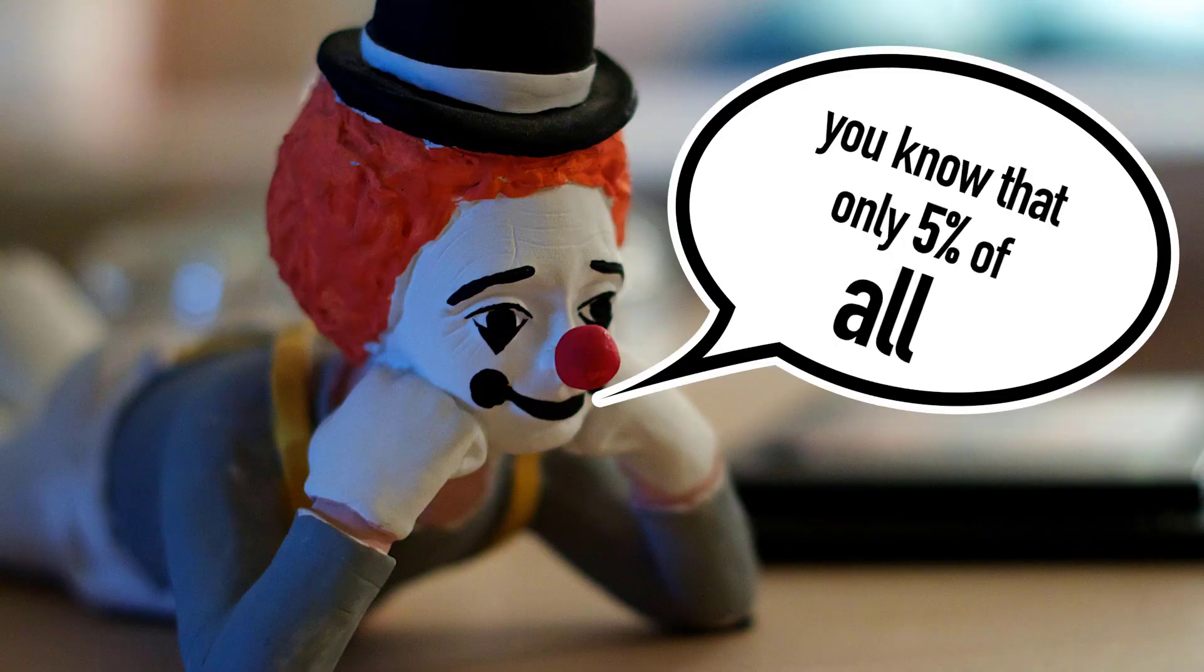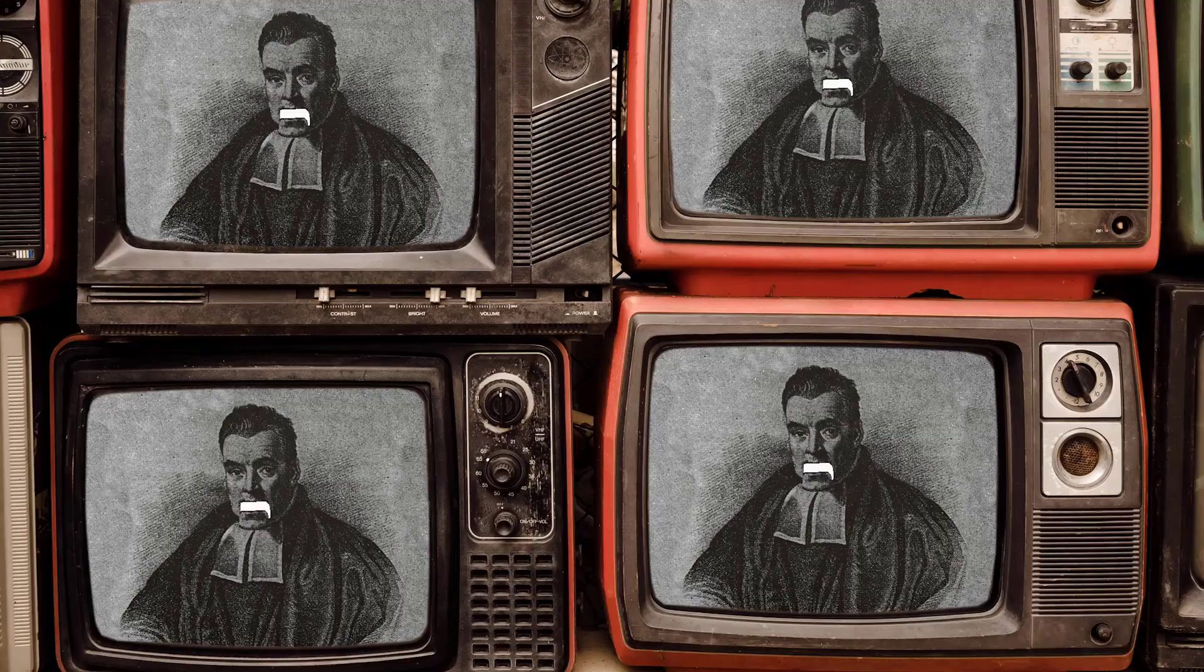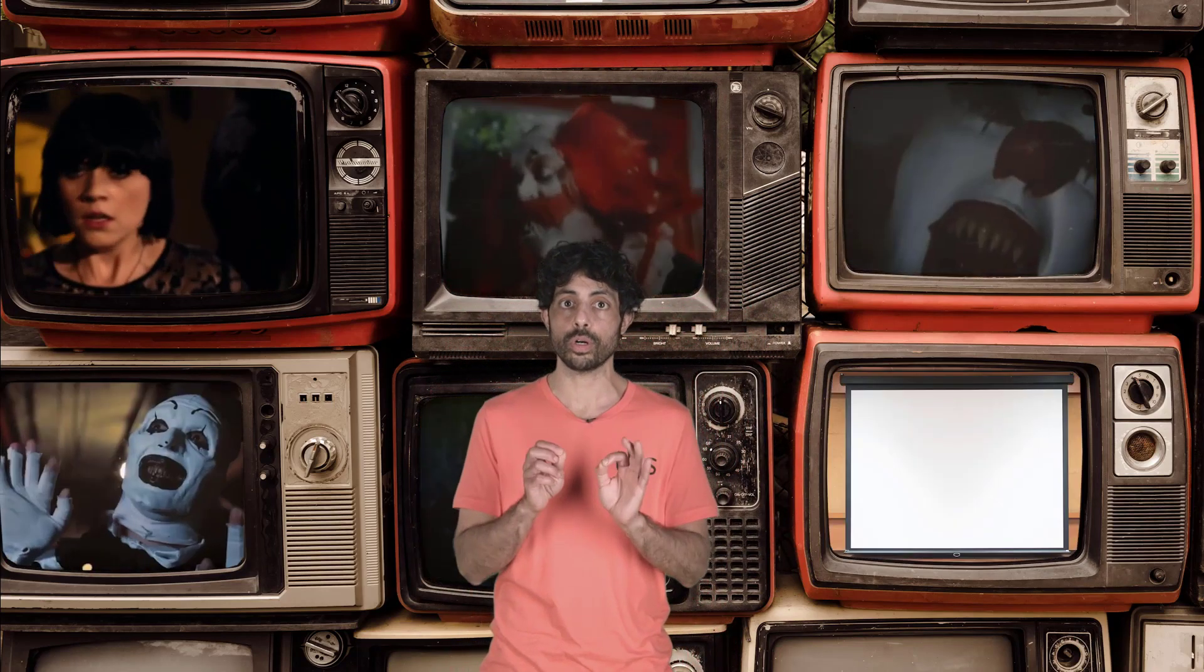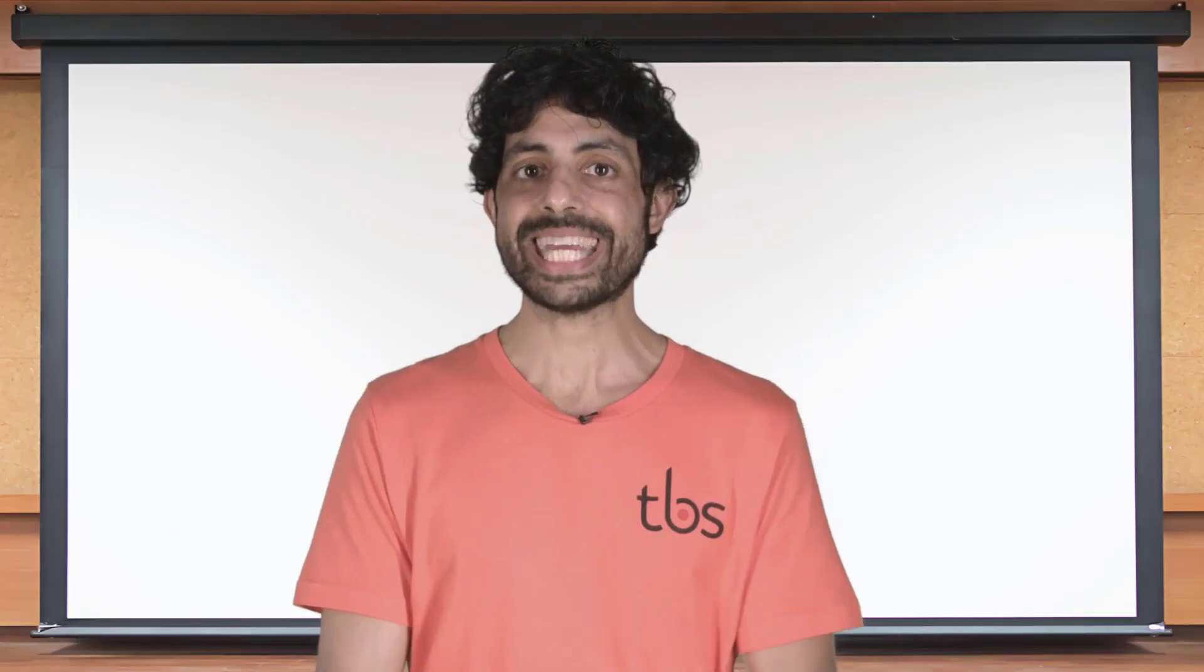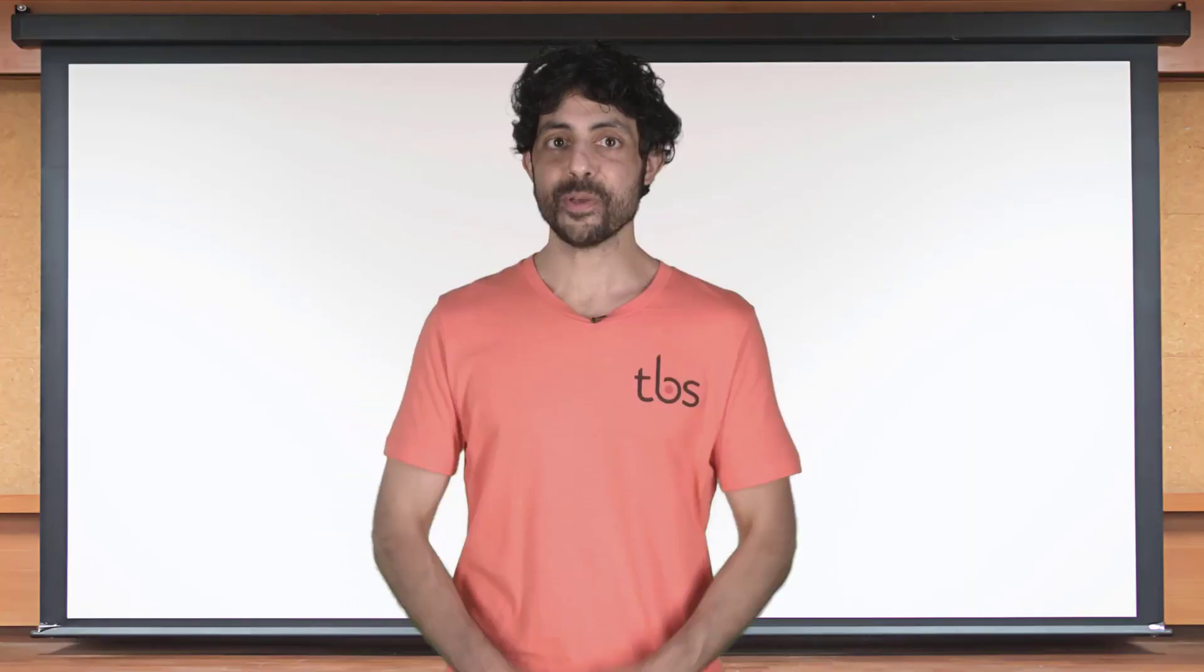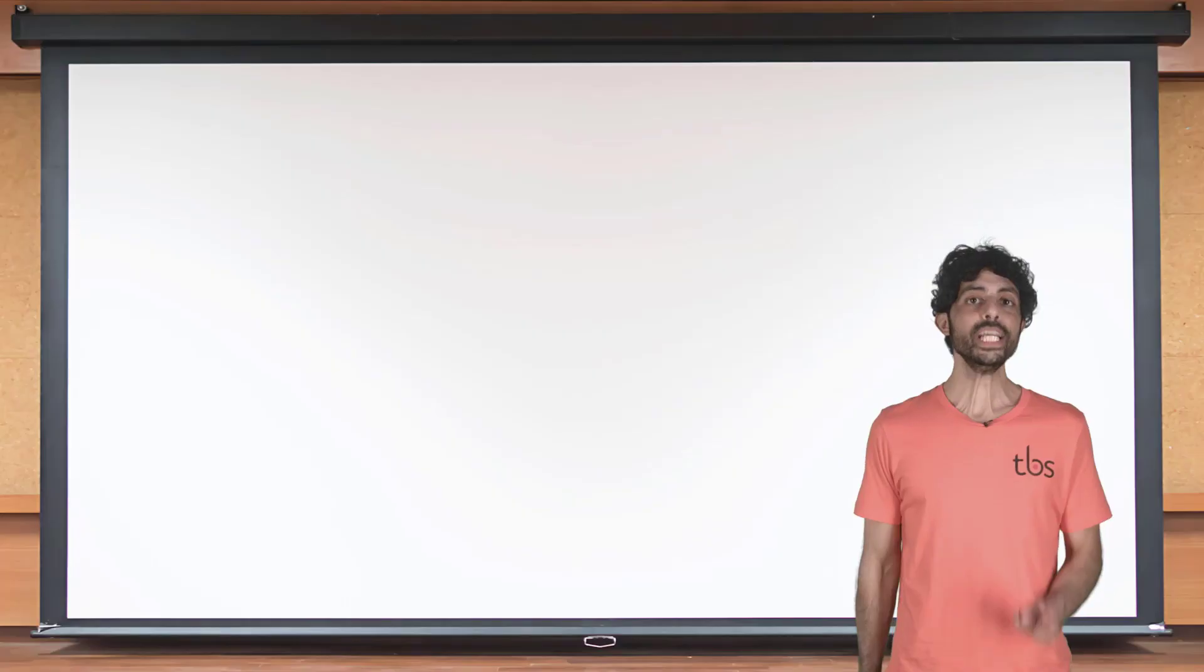You know that only five percent of all films are horror films. What am I supposed to do with this information? I'll tell you. Oh right, because clowns are commonly in horror films, so seeing a clown on screen increases the likelihood that you are watching horror and I can calculate exactly how much more likely using Bayes rule.